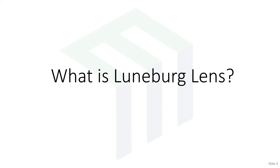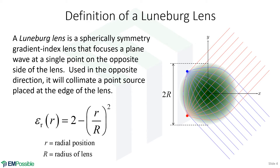What is a Luneberg lens? A Luneberg lens is a spherical object where the permittivity has a value of two at the center and then fades down to a value of one at the very edge. The profile that it follows is given by this equation, where little r is the distance from the center of the Luneberg lens, and big R is the radius of the Luneberg lens.